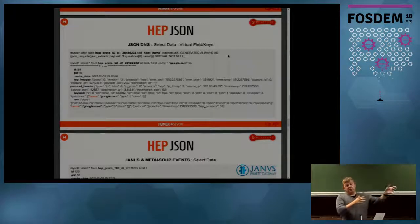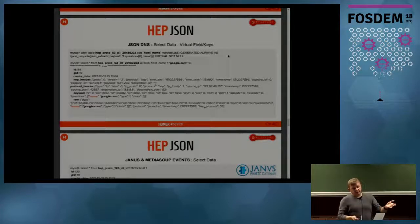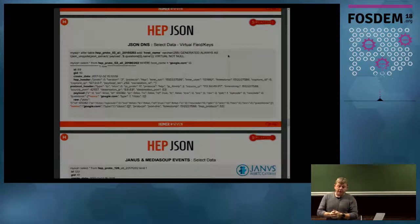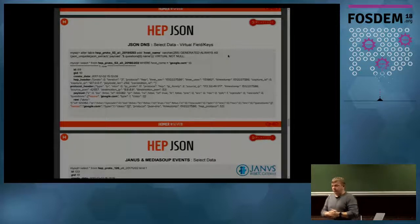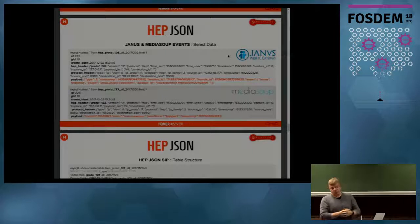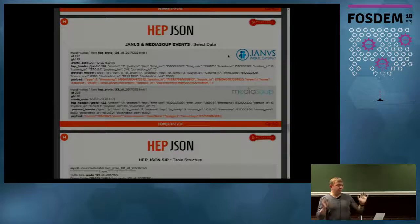Of course, you might ask — isn't this a full table scan? In JSON protocol in MySQL 5.7, you can also create virtual fields which can be indexed, and you can use those indexes for search. It's on your demand: if you have a lot of data and need to search frequently, you can create a virtual index and use it. Here is an example of how the Janus and MediaSoup data looks. Janus sends its special protocol, we store it in the database, and it will automatically, without any headaches, be immediately available for searching. This is also possible for SIP protocols and everything else already implemented in HOMER.